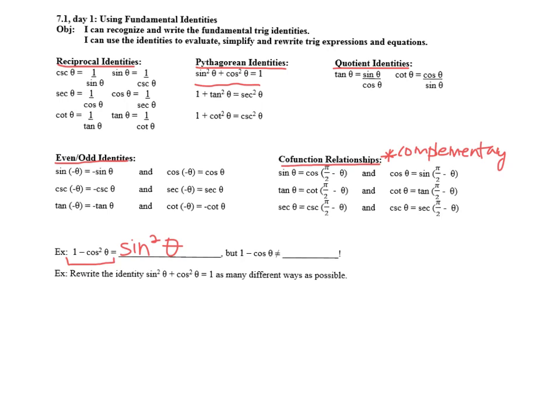Now that's true, but the second statement, if you took 1 minus cosine, that actually does not equal sine. So we can't square root when there's addition or subtraction.